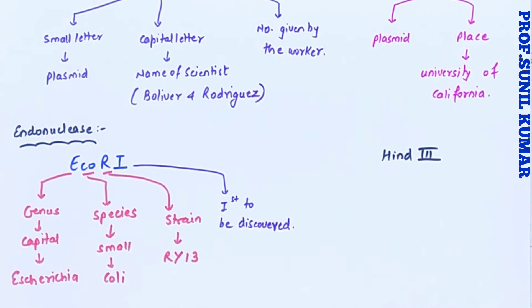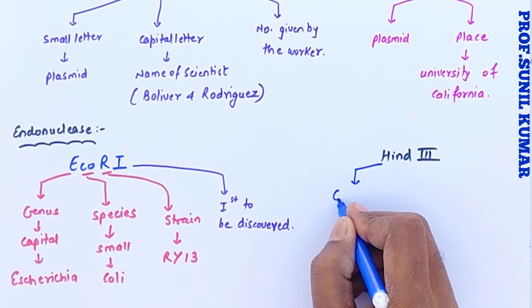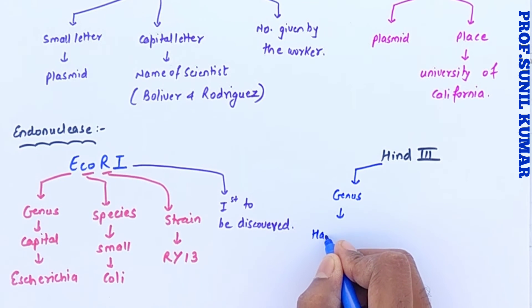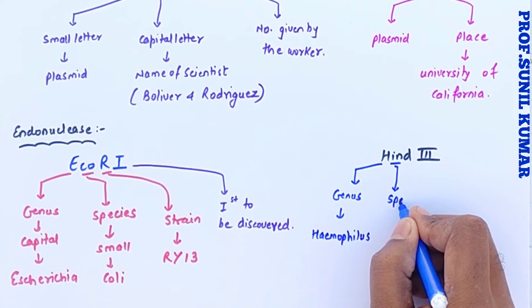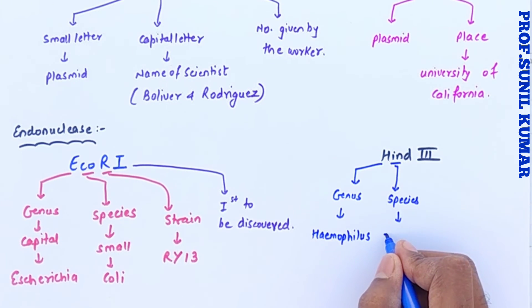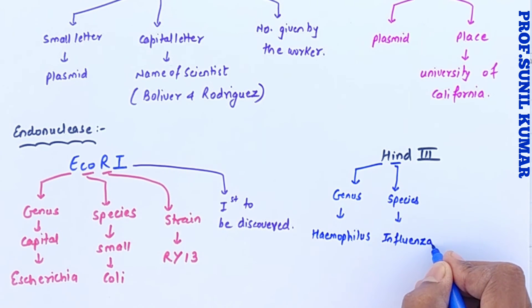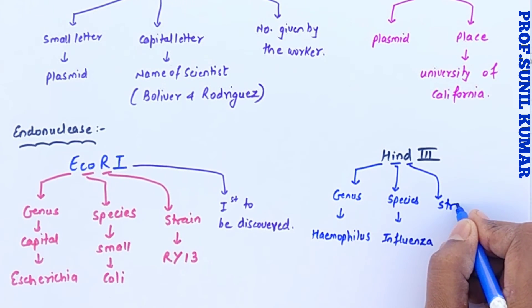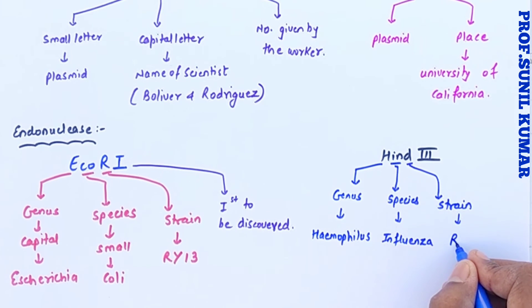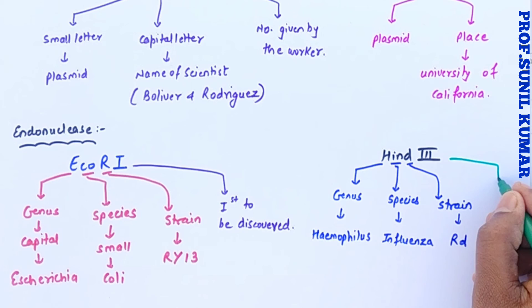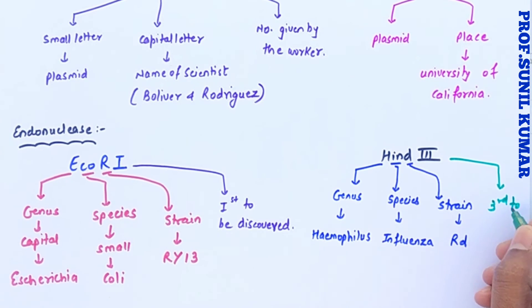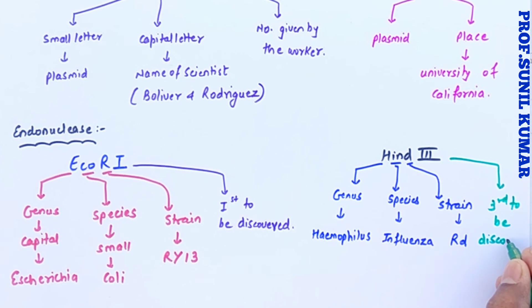Let's take one more example: HindIII. 'H' is capital, indicating the genus — Haemophilus. 'in' indicates the species — influenzae. So Haemophilus influenzae. The strain is 'd' — 'R' could not be taken because it was already used for EcoRI, so 'd' is taken as the strain. '3' indicates it was the third endonuclease to be discovered. So HindIII stands for the third endonuclease discovered from Haemophilus influenzae.